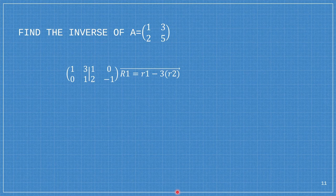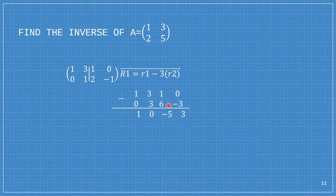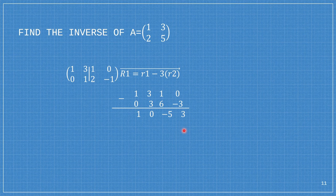Next, we make this into 0 by doing R1 minus 3 times row 2. 1 minus 0 is 1, 3 minus 3 is 0, 1 minus 6 is negative 5, and 0 minus negative 3 is positive 3. We replace row 1 by this. Now we have the identity matrix on the left — therefore, this is our inverse of the matrix. That is our answer. Thank you for listening.